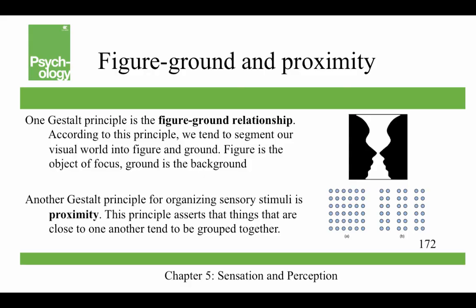One Gestalt principle is the figure-ground relationship — we tend to segment our visual world into figure and ground, where figure is the object of our focus and ground is the background. A classic example is vases with faces: you can see the vase as the figure, or you can see the faces as the figure, with one always acting as the background for the other.